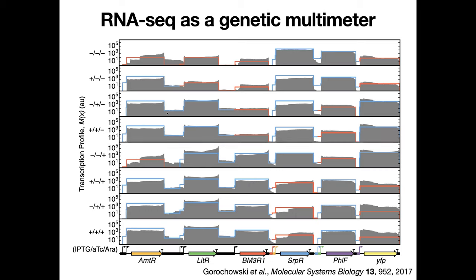Overlaying the expected flows on the experimentally measured flows, we can see that on the whole they match, but there is some variability. It's this variability that we want to better understand. While this is a nice holistic view, what we'd really like to do is better understand how each of these individual parts is leading to these various fluctuations.